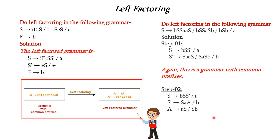So we rewrite this grammar. The first production is written as it is. For the second production, the common prefix SA is factored out, introducing a new variable A, and B is not related so it is kept as it is. In A we write the remaining parts: AS and SB respectively. Thus we have obtained the left factored grammar, because there is no common prefix in these three productions.